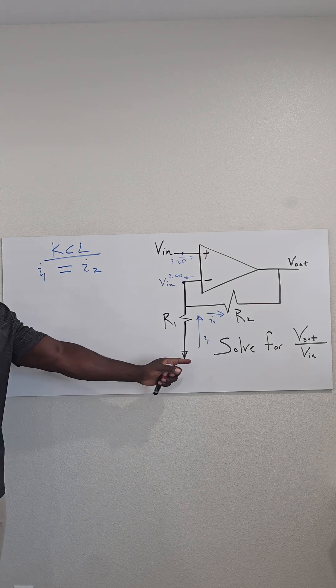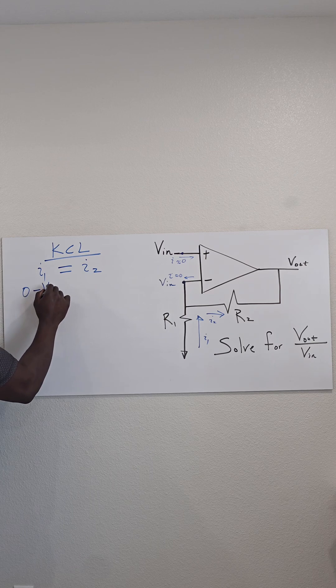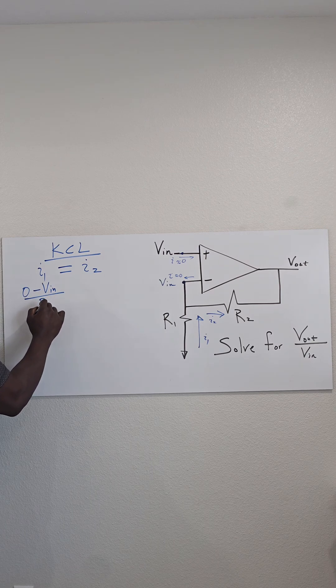As a result of that, I get zero minus Vin, so zero minus Vin over R1.